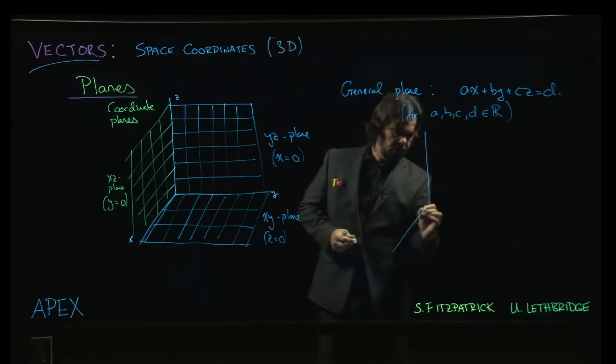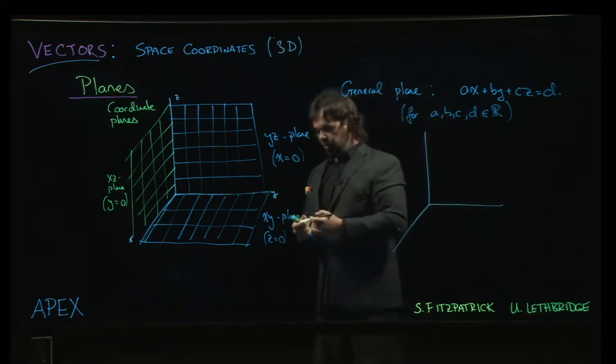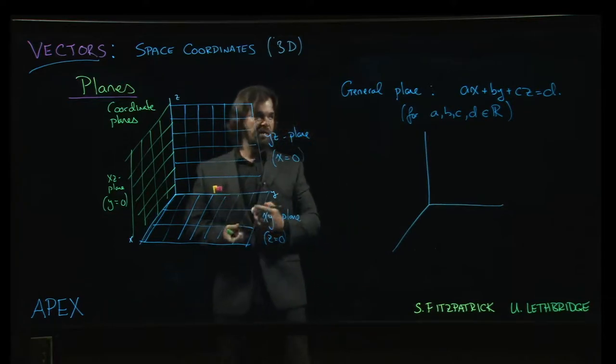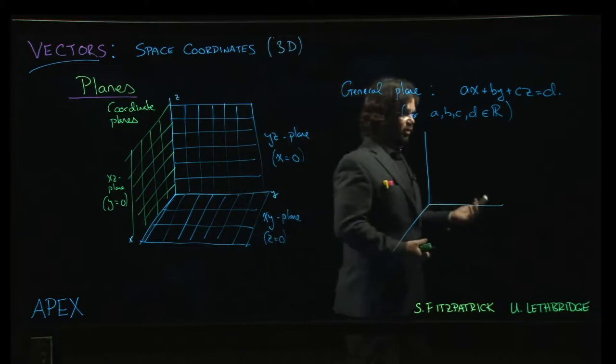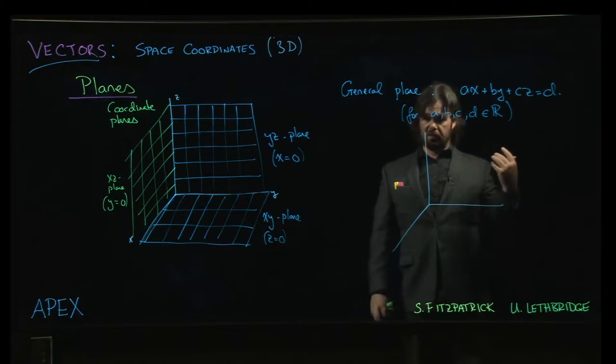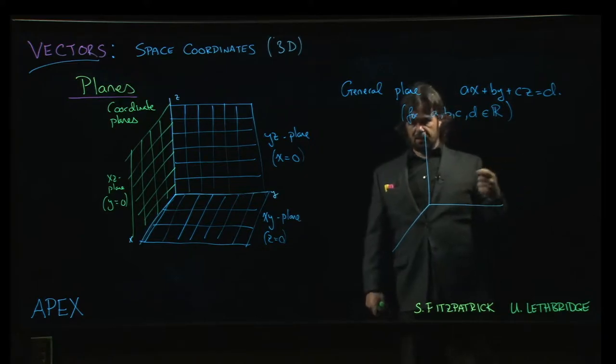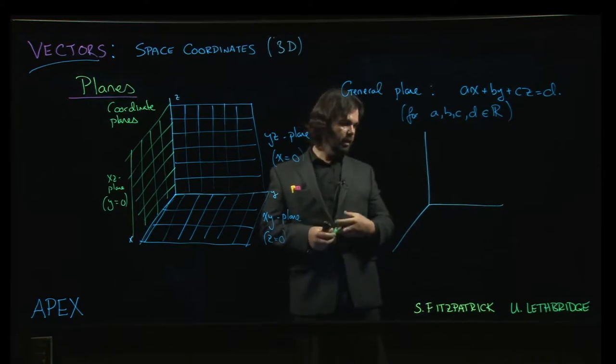And later on in this chapter, we will get into more detail on how do you actually sketch a plane in general. How do you sort of tell what's going on? We have to introduce vectors first because a key ingredient with understanding the placement of a plane in space is going to be the so-called normal vector. The normal vector is going to be given by these coefficients a, b, and c. But again, that's a story for later on in the course, in the chapter.